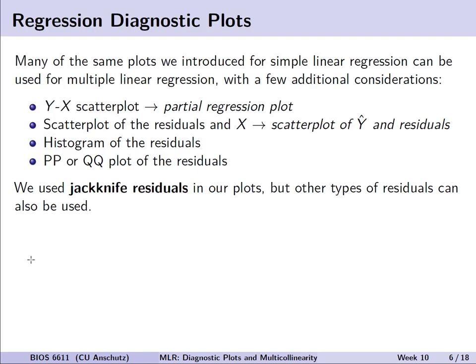Let's touch base again about those four major plots we introduced before for evaluating the appropriateness of our modeling assumptions for simple linear regression. We looked at a y-x scatter plot, a scatter plot of our residuals and the predictor x, a histogram of the residuals, and a p-p or q-q plot of the residuals. We used jackknife residuals, though technically we could use any type of residual.